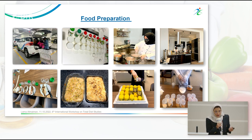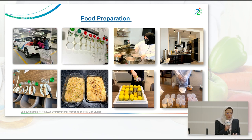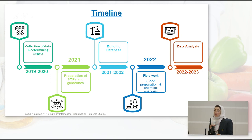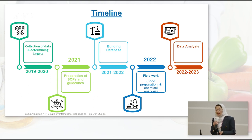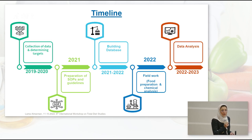Here are some pictures of the food preparation. We contracted two professional chefs to work at the SFDA kitchen. The proposal of the study and planning started in 2019. After that, we started preparing the SOPs alongside building a database. We are now in the phase of field work, food preparation, and chemical analysis. The last phase of the TDS is data analysis and the report, and hopefully by the end of this year and next year it will be ready for publication.